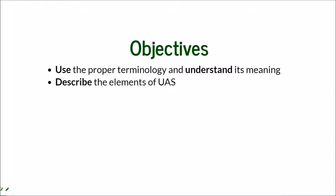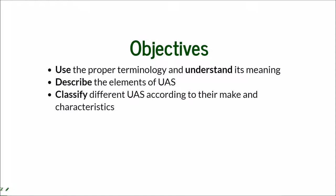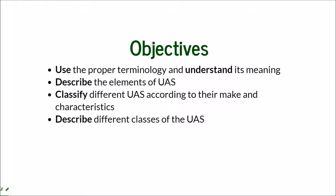Next we will describe the whole UAS system — what it actually is and what it entails. Then we'll move to classifications of the different systems according to their make and characteristics, covering just the basics since this is a very extensive subject. The main classes described are essential for navigating UAS-related research and commercial use.